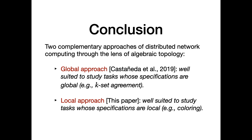In conclusion, there are two complementary approaches to distributed network computing through the lens of algebraic topology. The global approach, introduced last year by Castañeda et al., is well-suited to study tasks whose specifications are global, like consensus and k-set agreement. The local approach, developed in this paper, is well-suited to study tasks whose specifications are purely local, like coloring, MIS, and LCL tasks in general.